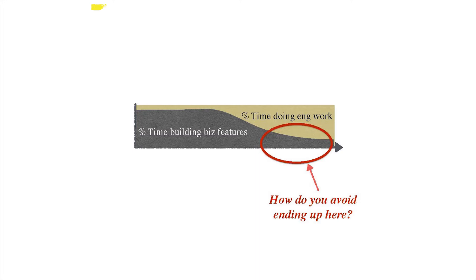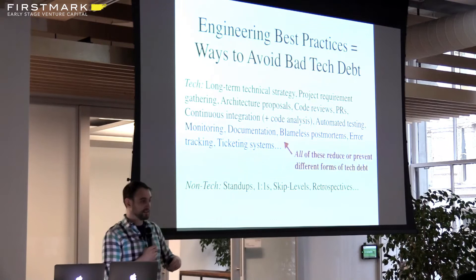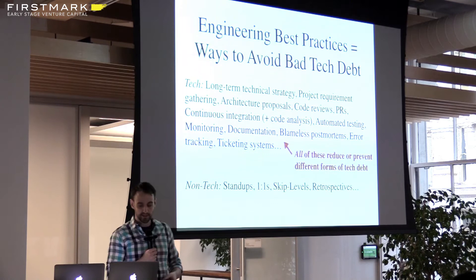A lot of our engineering best practices really deal with avoiding technical debt in some form — whether it's doing technical strategy work, looking at requirements, code reviews, pull requests. All these things help inform whether you're doing the right task balanced against business needs. The non-tech hygiene stuff is actually really important too: some of it will prevent tech debt, but management debt will also pile up if you don't have some of this stuff happening at certain scales.